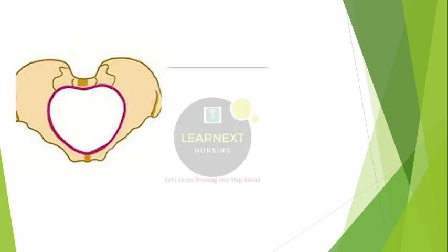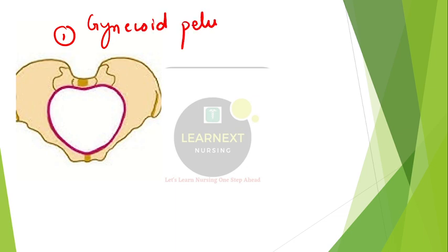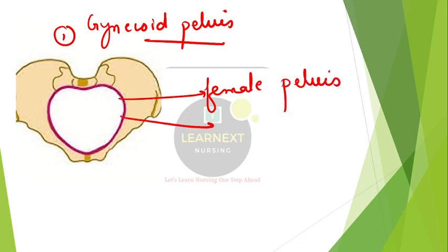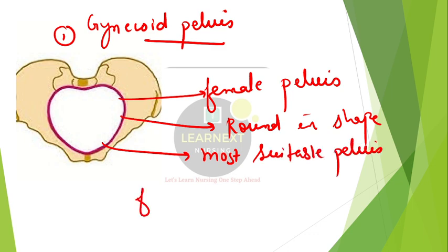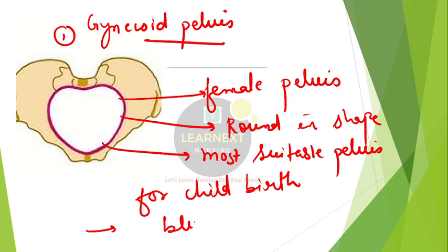Number one, we will see the gynecoid pelvis. We decide the type of pelvis from the shape of the pelvic brim. The gynecoid pelvis, which we call the female pelvis, is round in shape. The gynecoid pelvis is the most suitable pelvis for childbirth, and it has blunt ischial spines.